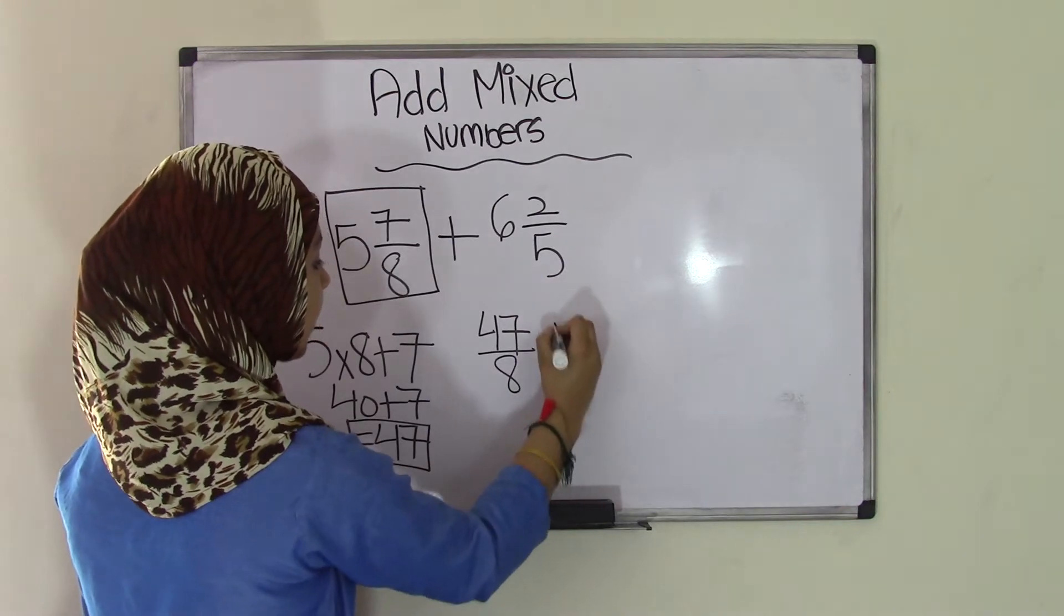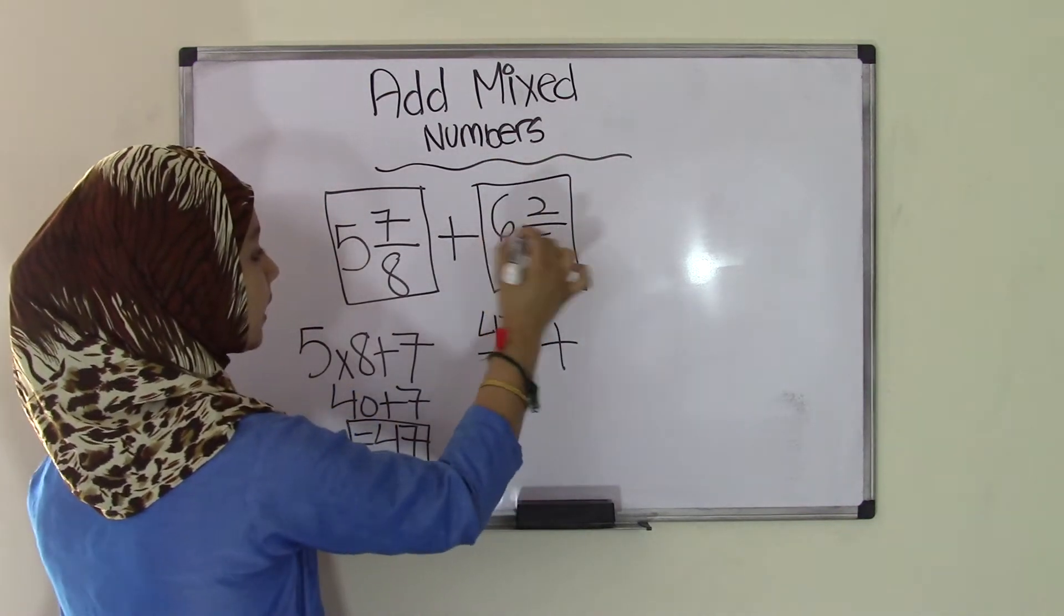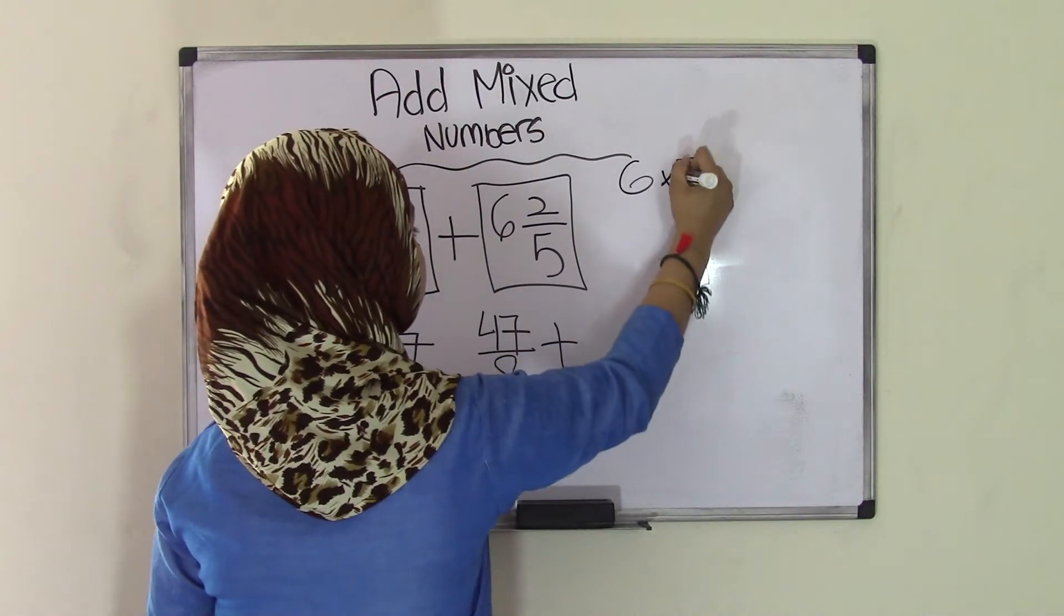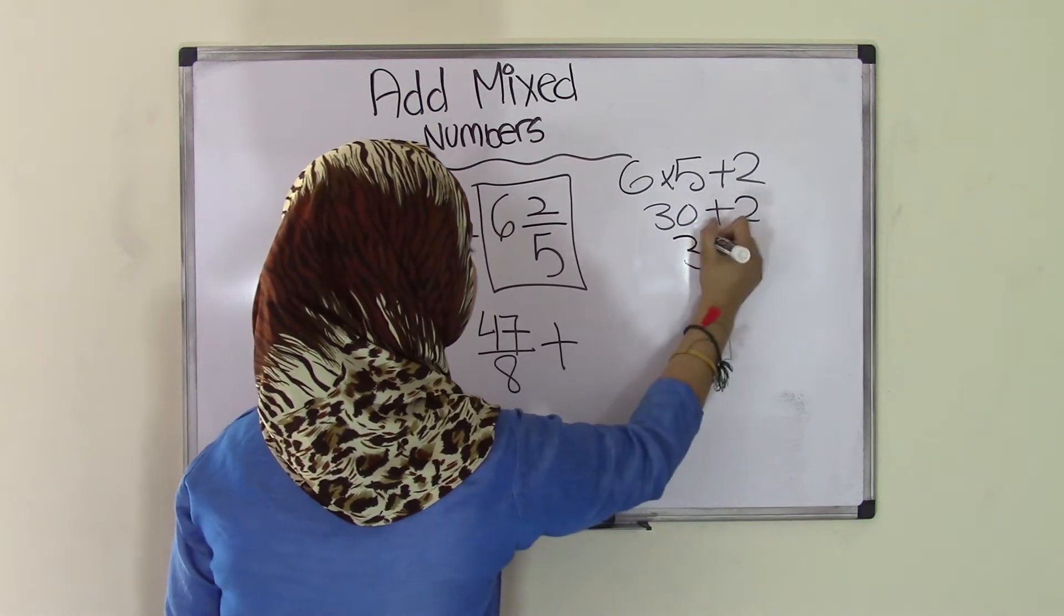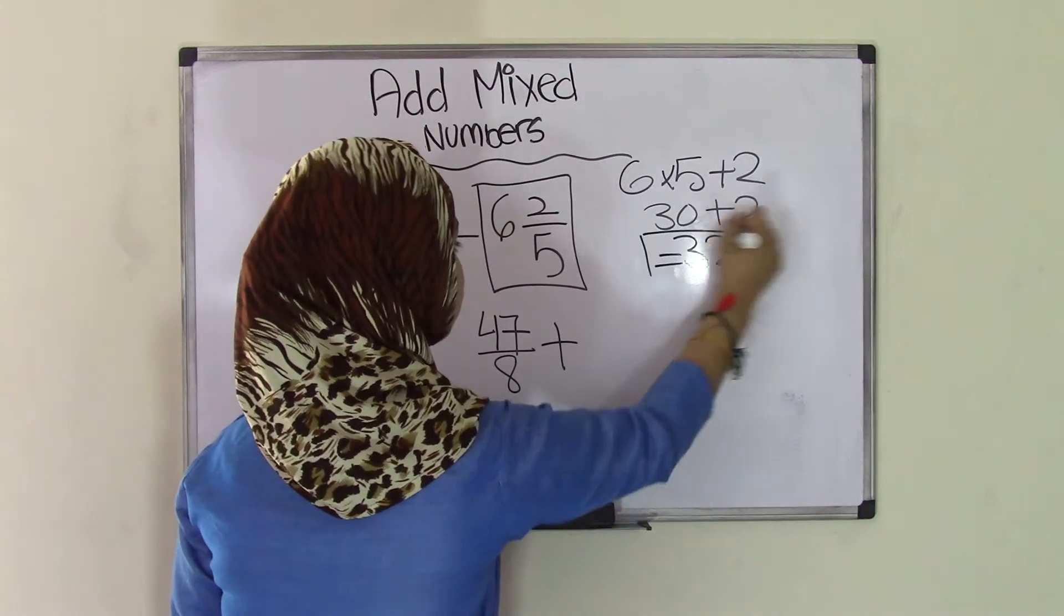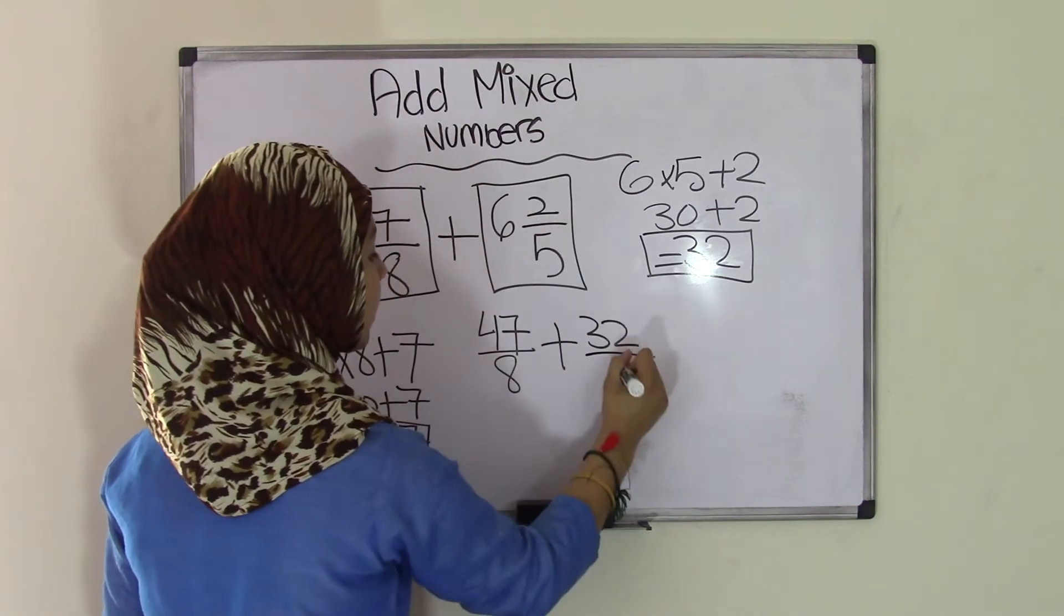Now you bring down the plus sign. Now you have to do 6 and 2/5. So remember, 6 times 5 plus 2. 6 times 5 is 30, plus 2 equals 32. Final answer becomes your numerator, 32, and the denominator stays the same, which is 5.